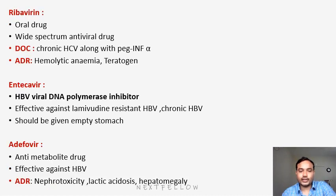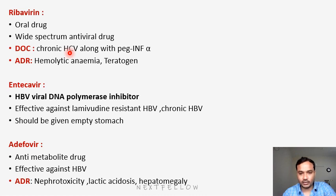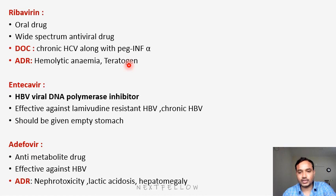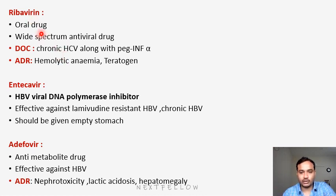Next drug is ribavirin. Ribavirin is an oral drug with a wide spectrum of antiviral activity. It is the drug of choice for chronic hepatitis C virus and should be given along with pegylated interferon alpha to reduce toxicity. Adverse effects include hemolytic anemia and teratogenesis — it has teratogenic activity.